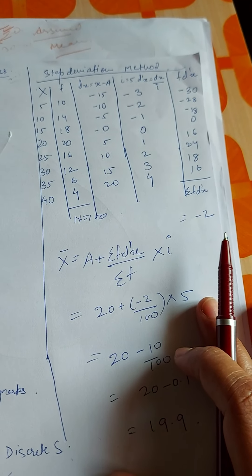Here I have taken a question where we see that there are marks of students given and number of students are mentioned. In discrete series, we can solve this question from the direct method, shortcut method, and step deviation method. Marks are written as x and number of students is mentioned as frequency. When we multiply both, f into x, we get this calculation. Sigma f equals n equals 100.